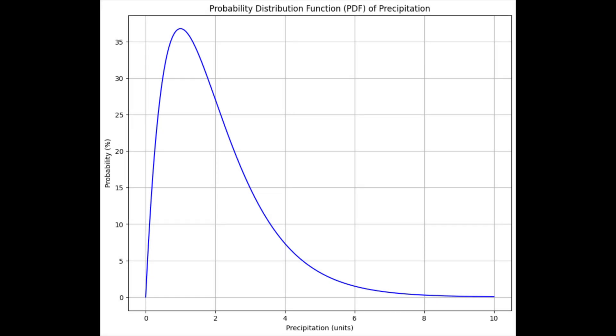Gamma distributions are a bit special in the world of meteorology. Gamma distributions are heavily weighted toward zero, meaning there is a high probability of values near or at zero with rapid fall off to the right in the distribution.